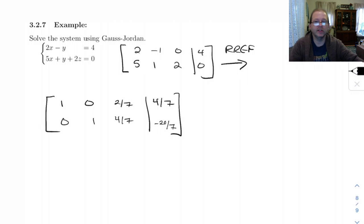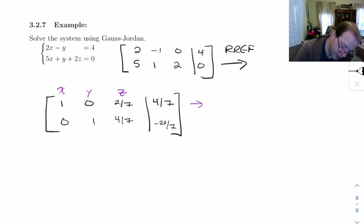So let's write this as a parametric solution. Our variables were x, y, and z. So this top row is going to give me, and z is my free variable. So this is going to give me x is equal to 4/7 minus 2/7 z.